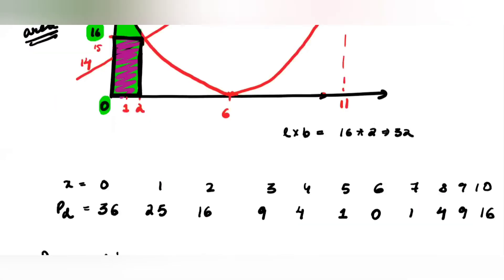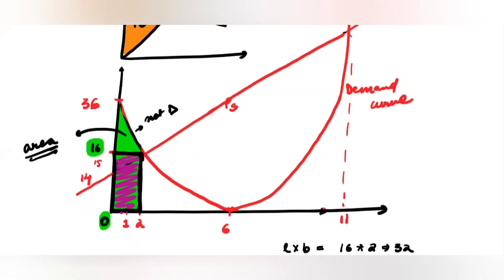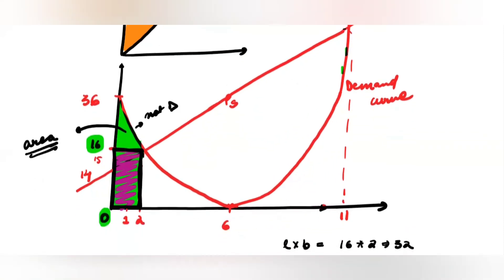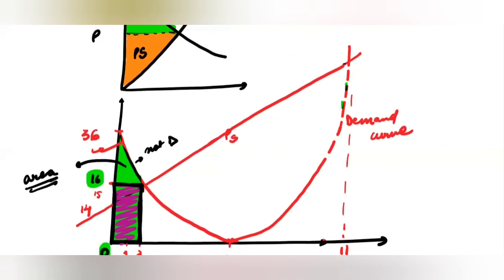It's a pretty simple question, but the key point is: although there is another intersection at X=11, that does not satisfy the definition of consumer surplus — where willingness to pay exceeds the market price. In that region the opposite is true, so you only consider the first intersection. The consumer surplus is just this area, which gives 56/3.